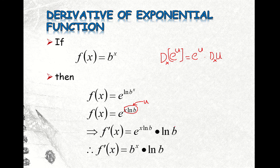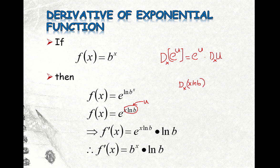So the derivative of u — note that ln b is a constant. Our u is x times ln b. Since ln b is a constant with respect to x, you can isolate the constant and rewrite this as ln b times the derivative of x.